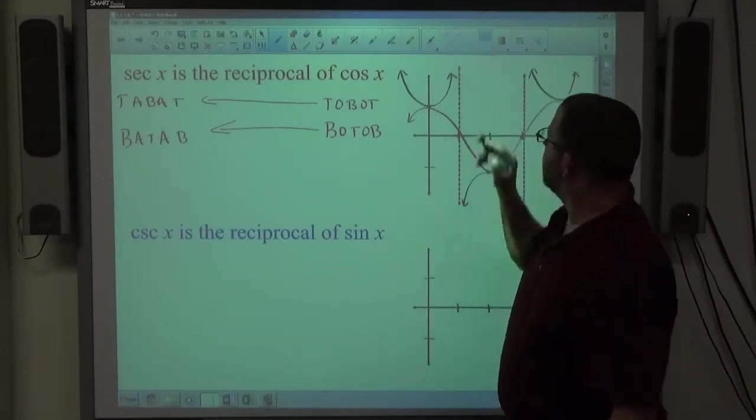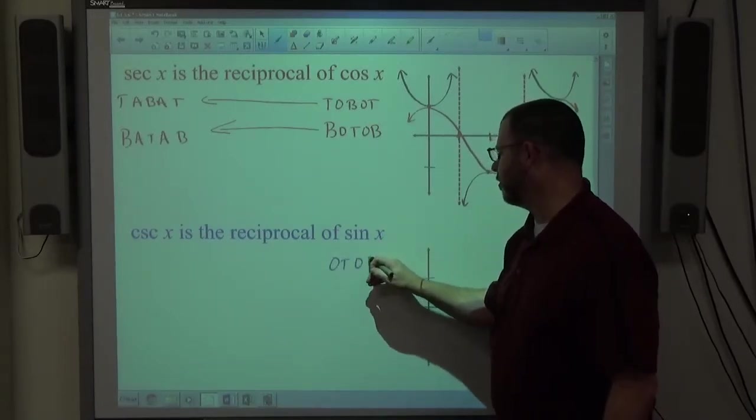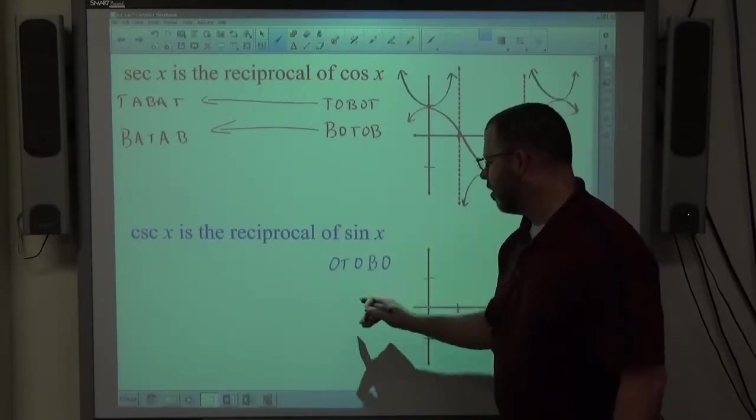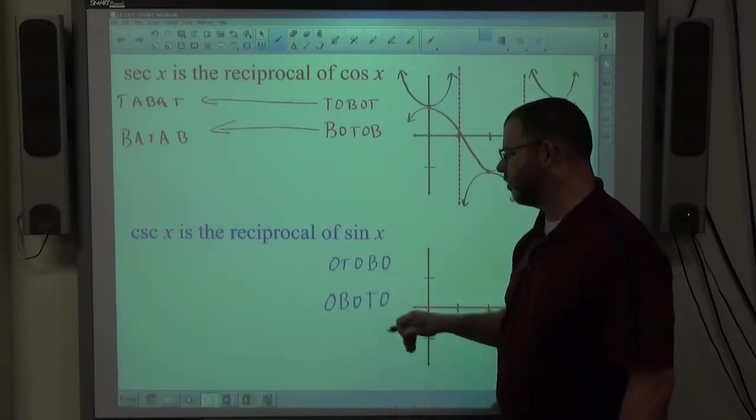Sine of x, same deal. Sine of x starts at zero, it either goes up, back to zero, down, back to zero, or it starts at zero, goes down, back to zero, goes up, back to zero.